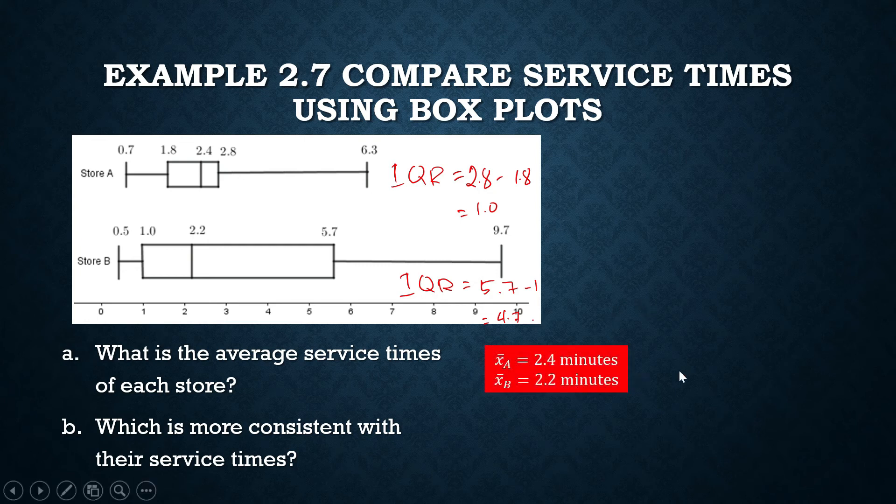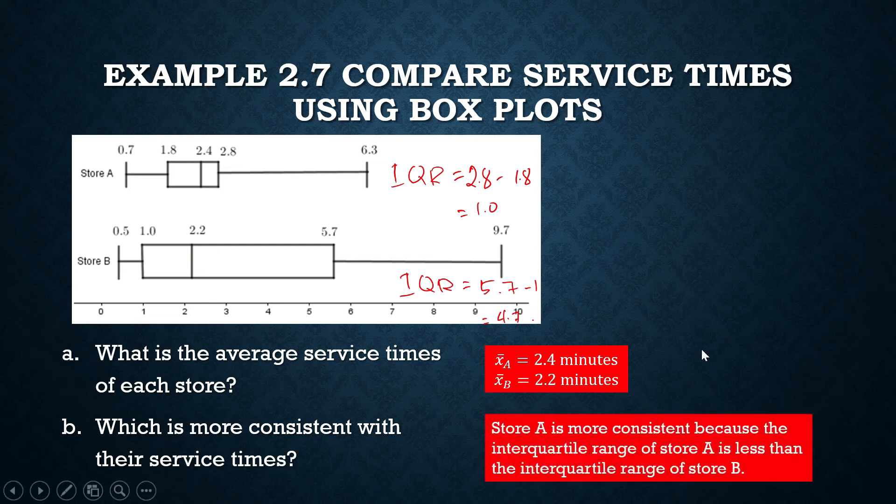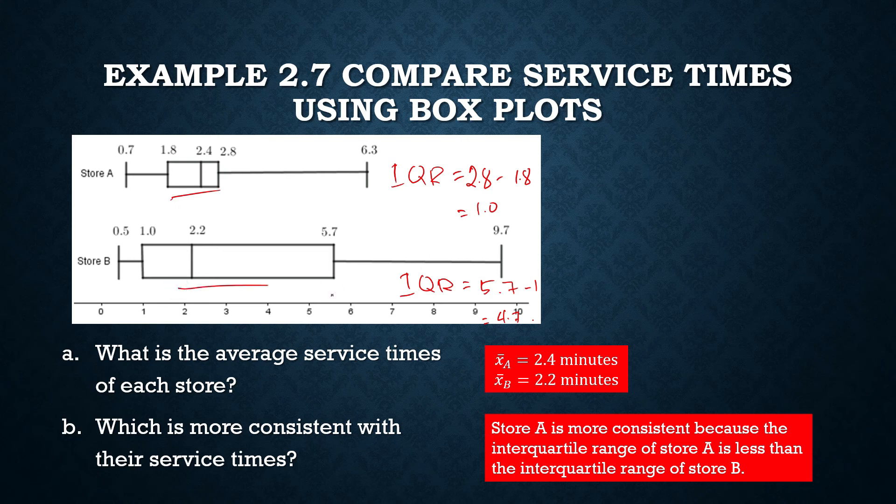Again, the service times, the average service time for store A is 2.4, measured by the median. For store B, it is 2.2. Store A is more consistent because the interquartile range of store A is less than the interquartile range of store B. In fact, you can make that conclusion just by comparing the length of the rectangle or the length of the box. This one is shorter, this one is longer. This one has a shorter interquartile range, this one has a longer interquartile range.